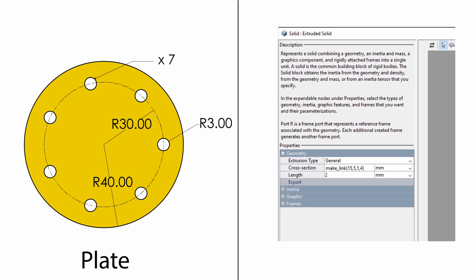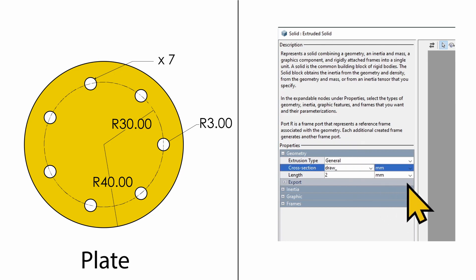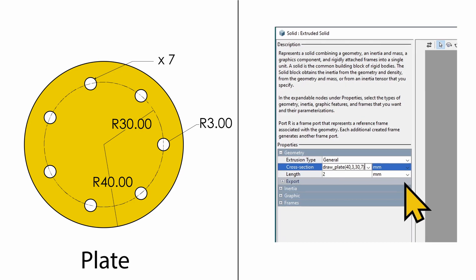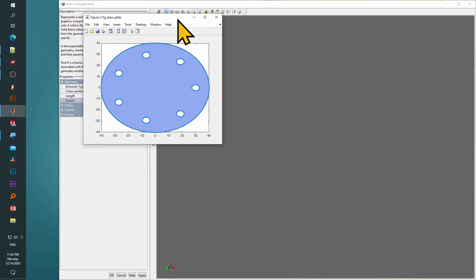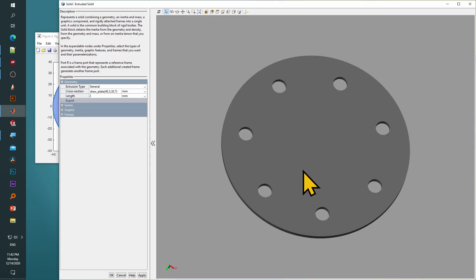Now for the last example, we'll generate a circular plate with a hole pattern inside. We'll follow the same steps. The function for this is draw_plate. The external radius is 40, the radius of the hole is 3, the center line circle radius is 30, and the number of holes is 7. And here's the extruded plate.